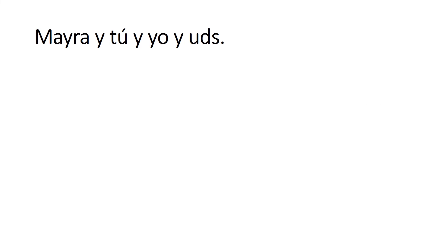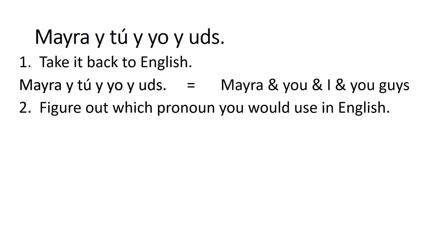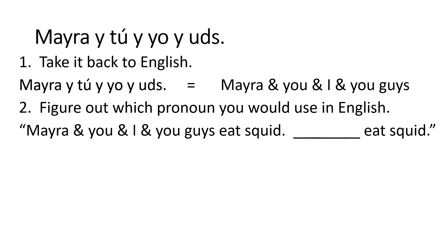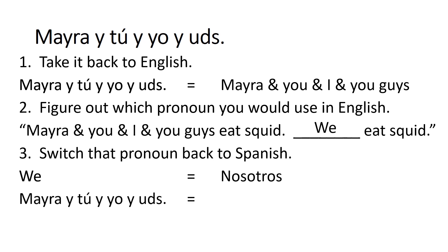Now let's really go for it. Mayra y tú y yo y ustedes. Let's take it back to English: Mayra and you and I and you guys. Let's put that group in a sentence: Mayra and you and I and you guys eat squid — we eat squid. Now take it back to Spanish. 'We' in Spanish is nosotros. Therefore, if I got a sentence with Mayra and you and I and you guys all doing the verb, then I'm going to conjugate that verb in the nosotros form. That's it. That's all there is to it. You got it.